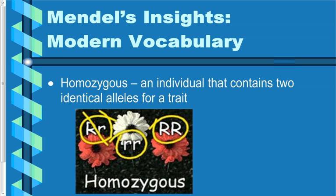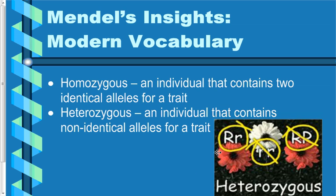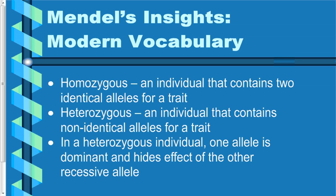If you are homozygous for a trait, your two alleles for that trait are exactly the same — we might represent that with two capital Rs or two lowercase rs. If you are heterozygous, you have two different alleles, usually represented with one capital and one lowercase letter. If you're heterozygous, Mendel discovered that one of your two alleles is going to be dominant and the other recessive — the dominant allele is the only one that will show up. If you're homozygous, you'll express whichever allele you have, but if you're heterozygous, you normally only express the dominant one.